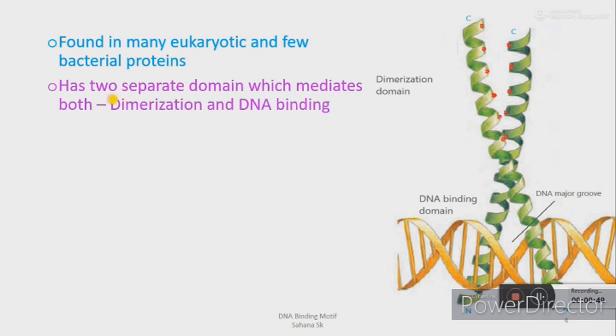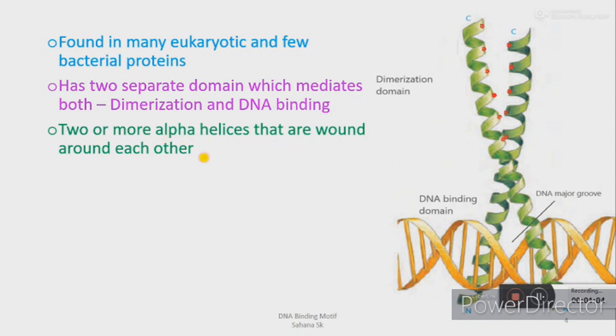It is a very interesting motif which is found in many eukaryotic and few bacterial proteins. It has two separate domains which mediate both dimerization and DNA binding. The leucine zipper motif is named because of the way the two alpha helices, one from each monomer, are joined together to form a short coiled coil.